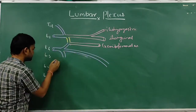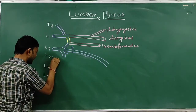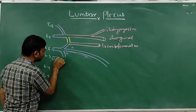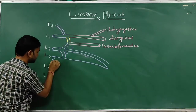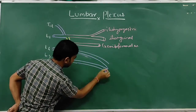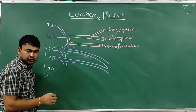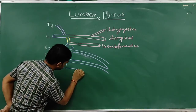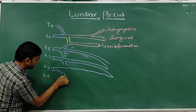L2 gives a dorsal division and a ventral division. Similarly, L3 gives a dorsal division and a ventral division. L4 gives a larger dorsal division and a smaller ventral division.